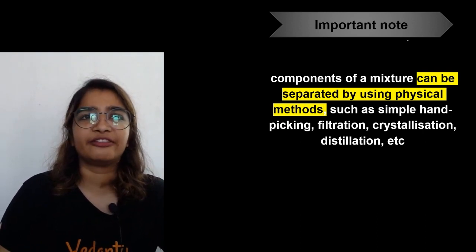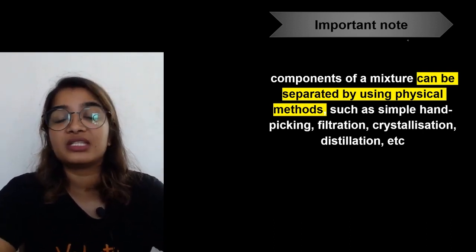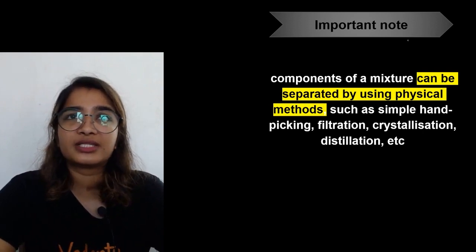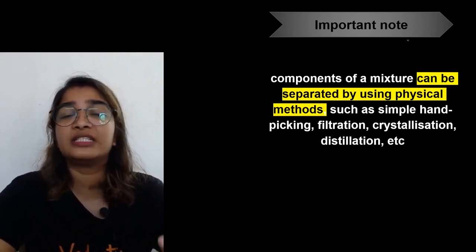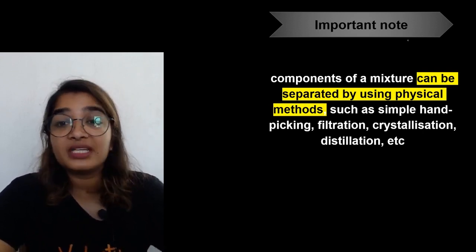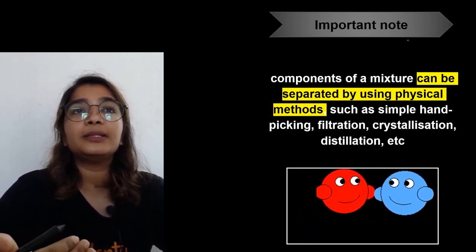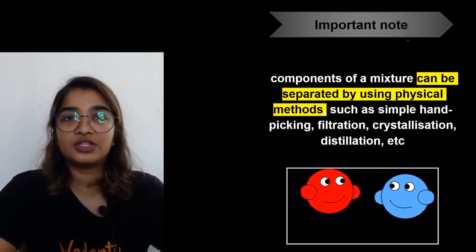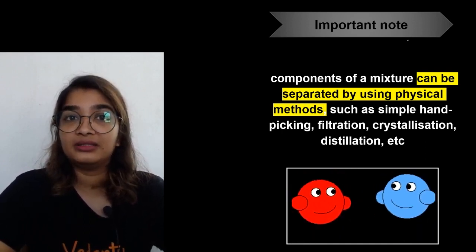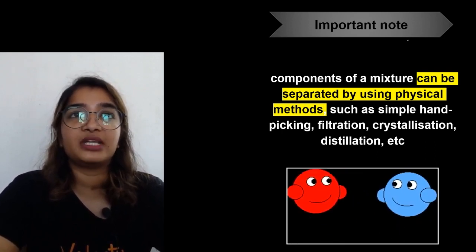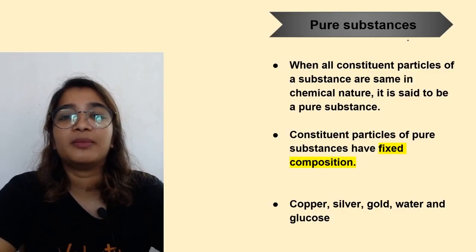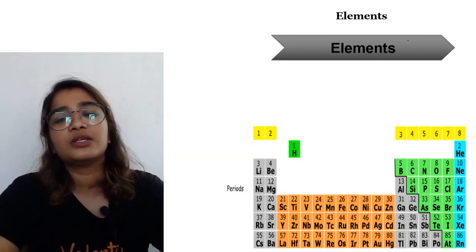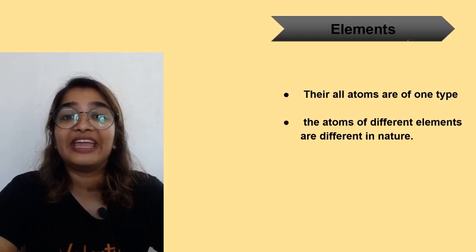Now, if you've mixed oil and water or ink and water, how do you separate the components? Mixtures can be separated using physical separation techniques like centrifugation, distillation, fractional distillation, or a separating funnel. Pure substances, however, cannot be separated by physical methods — for example, you cannot separate hydrogen and oxygen from water using physical methods. They can only be separated by chemical or electrochemical methods. This is the major difference between mixtures and pure substances.